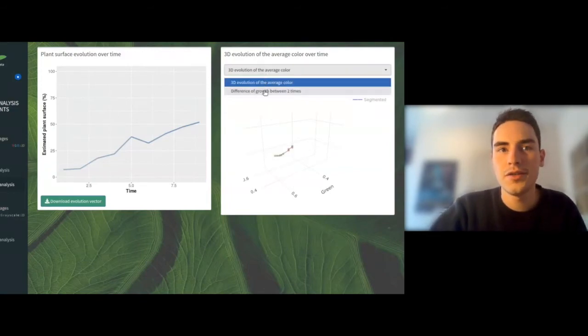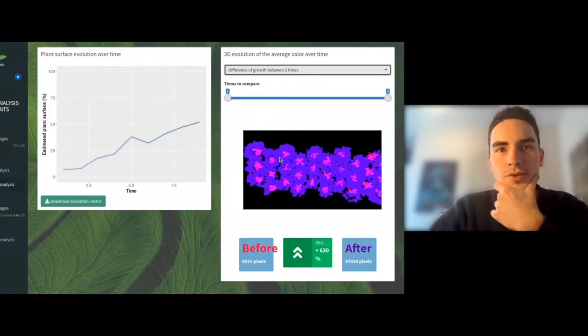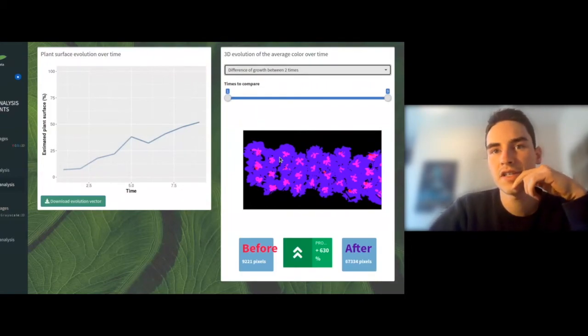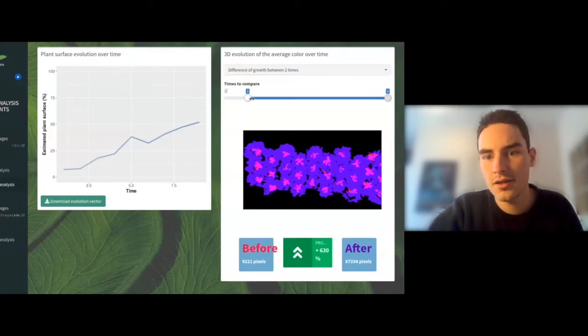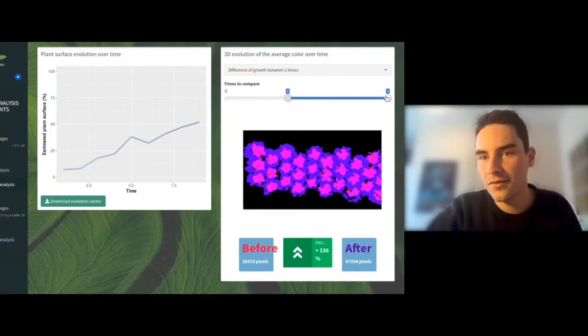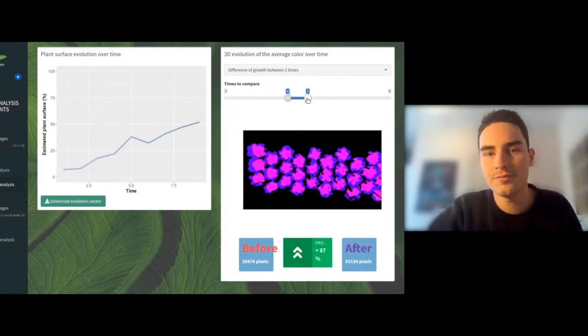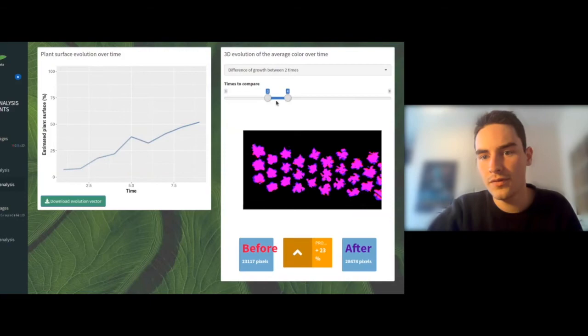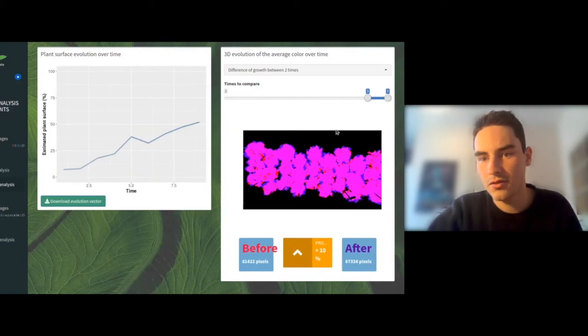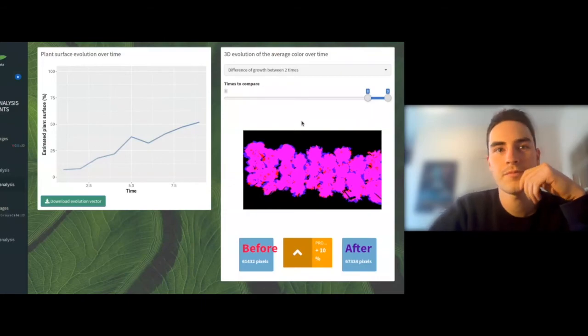Here is a new tool. It allows you to characterize the growth difference between two times. As an example here, we can see a big increase of the growth. And if I move the slider, it makes it possible to make a variation of time.